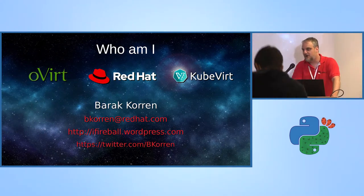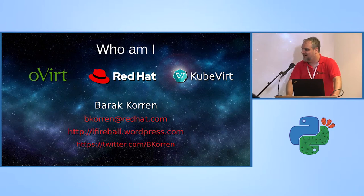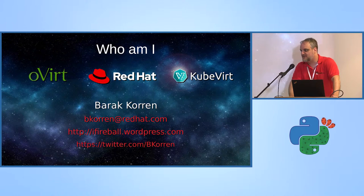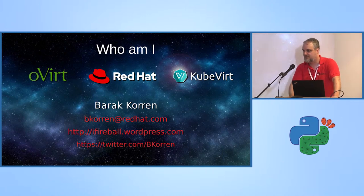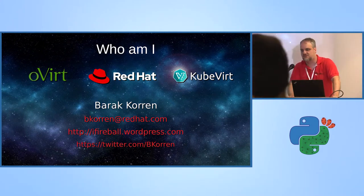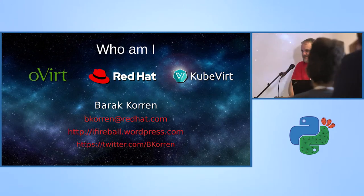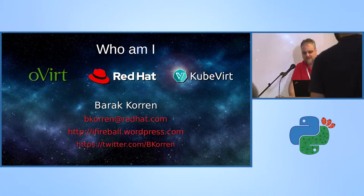My name is Barack. I work at Red Hat — you can see from my red shirt. I am involved in several projects. Two prominent ones are oVirt, which is an open source virtualization software that competes with things like VMware, and another one is KubeVirt, which is taking virtualization to the next level by putting Kubernetes in the picture.